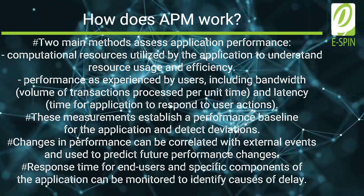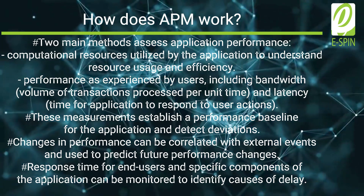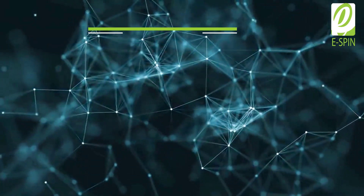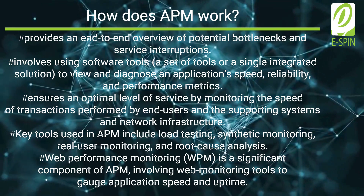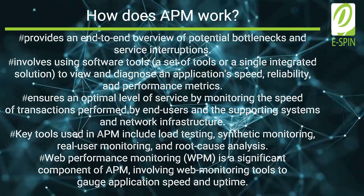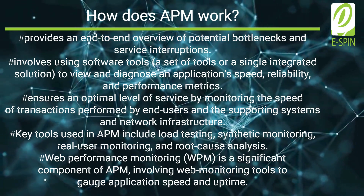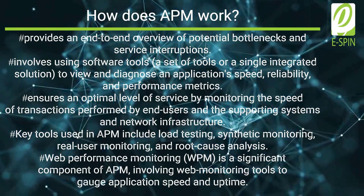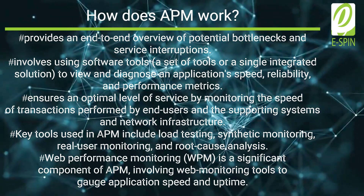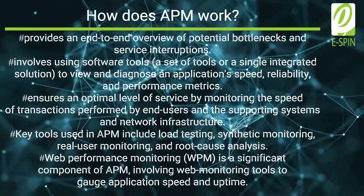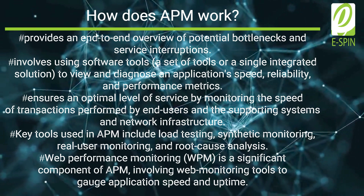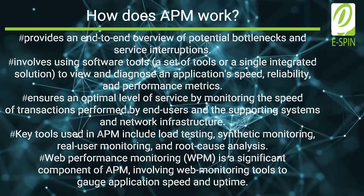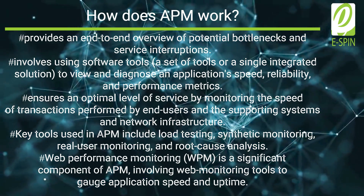In addition to measuring response time for end users, it is also possible to monitor response times for specific components of a web application to pinpoint causes of delay. APM provides an end-to-end overview of potential bottlenecks and service interruptions by monitoring the speed of transactions performed by end users and the supporting systems and network infrastructure. It involves using software tools — whether a set of tools or a single integrated solution — to view and diagnose an application's speed, reliability, and other performance metrics, thereby maintaining an optimal level of service. Load testing, synthetic monitoring, real user monitoring, and root cause analysis are some of the primary tools used in APM.